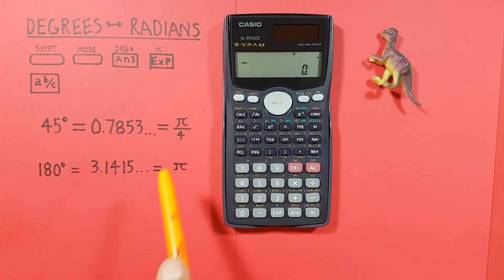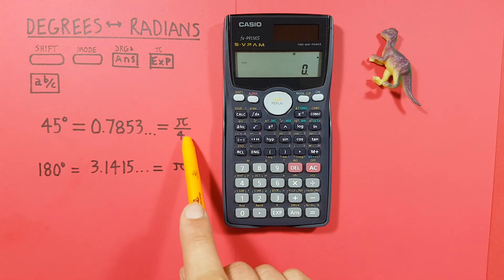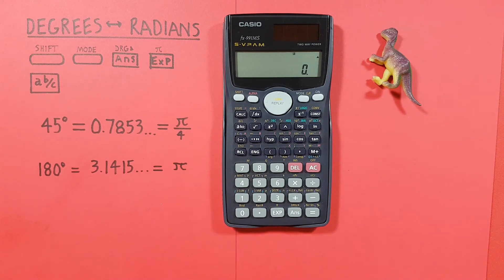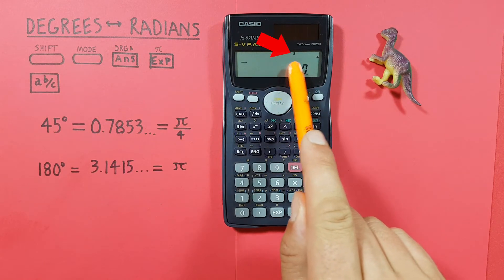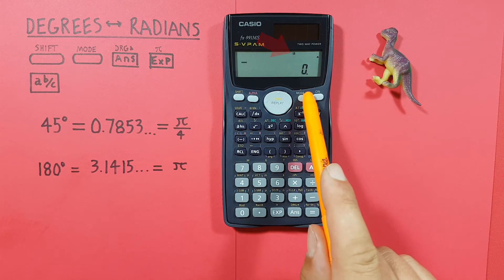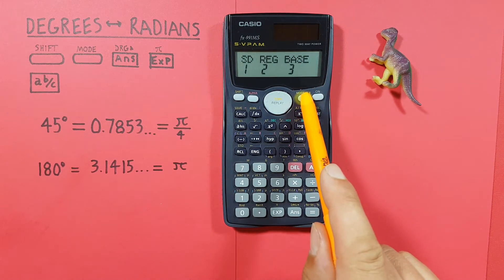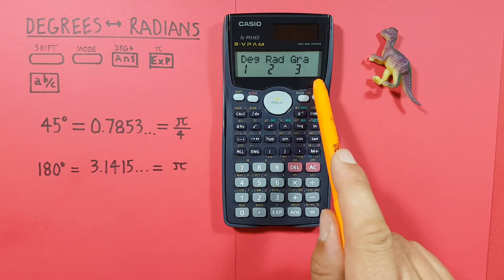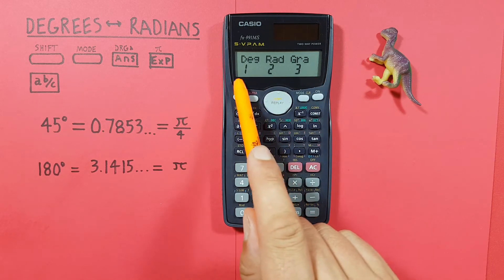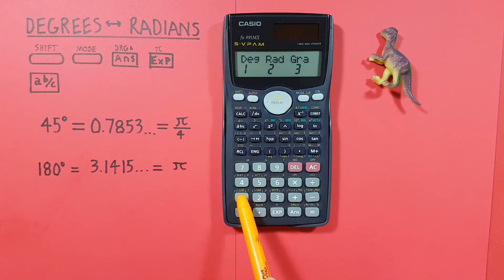What if we were given the radians — let's say pi over 4 — and wanted to get this as degrees? We do the same thing. First we have to set our calculator to the mode we want our results in. Since we're in radians right now we need to change this to degrees. So we press mode and keep going until we see the three options, and choose number 1 for degrees.